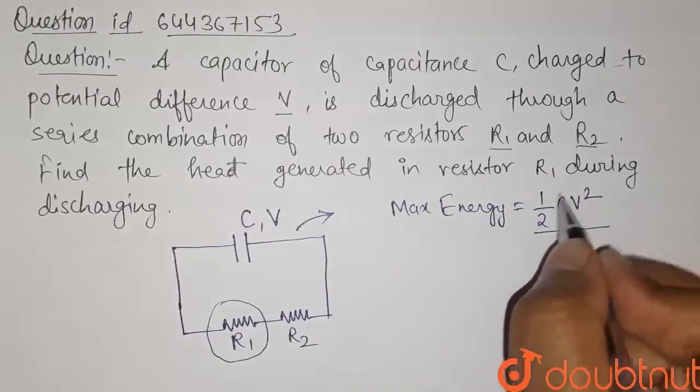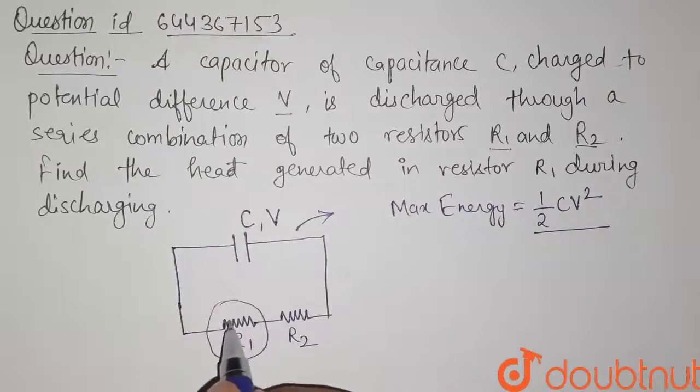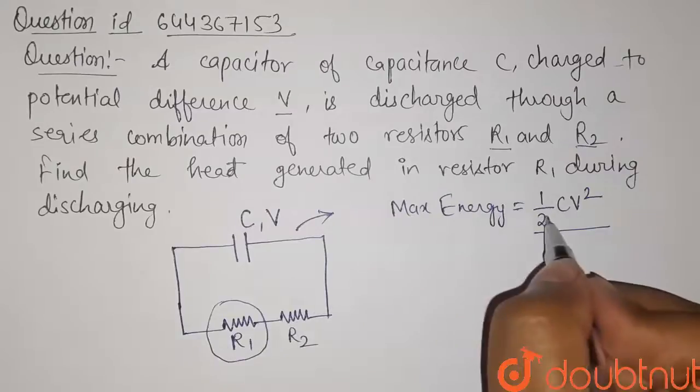So this is the formula for energy. Now this energy of capacitor is liberated through these two resistors in the form of heat. So the heat generated in these two resistors will equal this total energy.